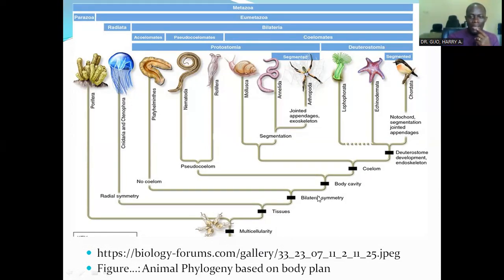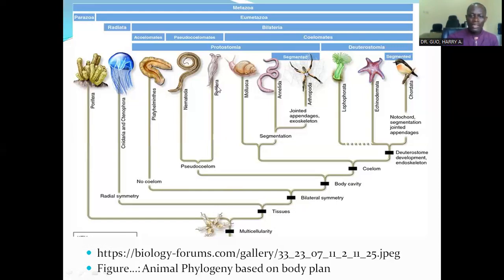Then those that have bilateral symmetry belong to the group of animals called bilateria. The ones that do not have body cavity — no coelom — are the platyhelminthes, the flatworms. Then the ones that have body cavity: those with a false body cavity are called the pseudocoelomates. The pseudocoelomates are the nematodes of phylum Nematoda and the rotifers of phylum Rotifera.